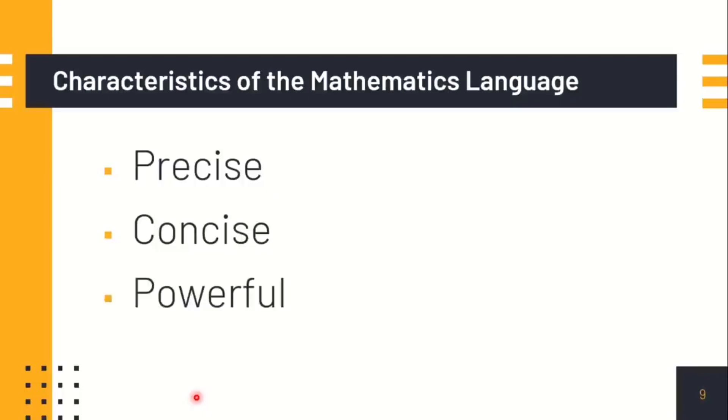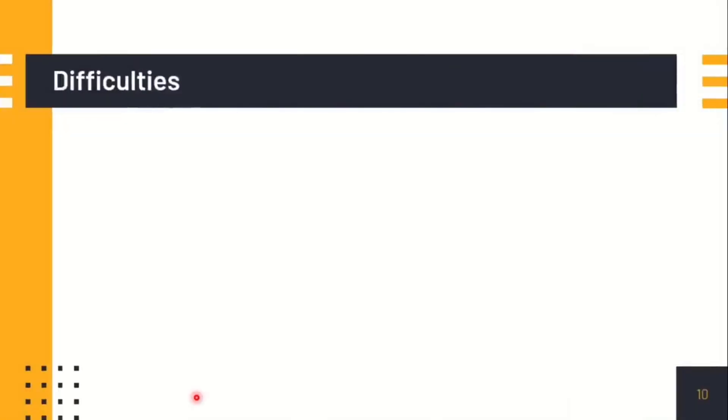And lastly, it should be powerful. Meaning, you were able to express your thoughts with ease. Bear in mind that sometimes language in mathematics and language in English are sometimes contradicting. Because there are some words in English that, when used in mathematics, have different meaning.